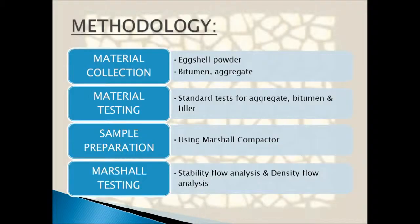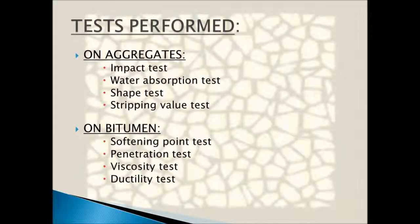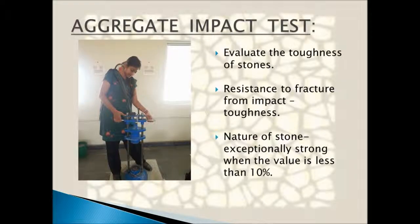The properties of bitumen are checked by performing a number of tests: penetration test, softening point, ductility test, viscosity test, and specific gravity. The actual characteristics are also found by analyzing specific gravity and comparing with other journals. The percentage passing sieve number 200, or 75 micron, is also tested.